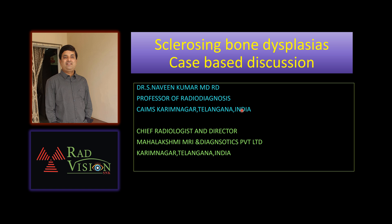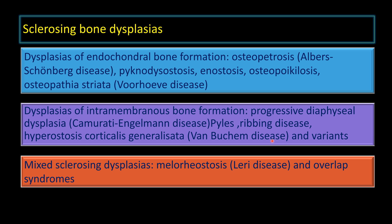Welcome to the new session. We will discuss sclerosing bone dysplasia through case-based discussion. Sclerosing bone dysplasias are classified into dysplasias of endochondral bone formation — that is osteopetrosis, pycnodysostosis, inostrosis, osteopoikilosis, and osteopathia striata — and dysplasias of intramembranous bone formation, which include Camurati-Engelmann disease.